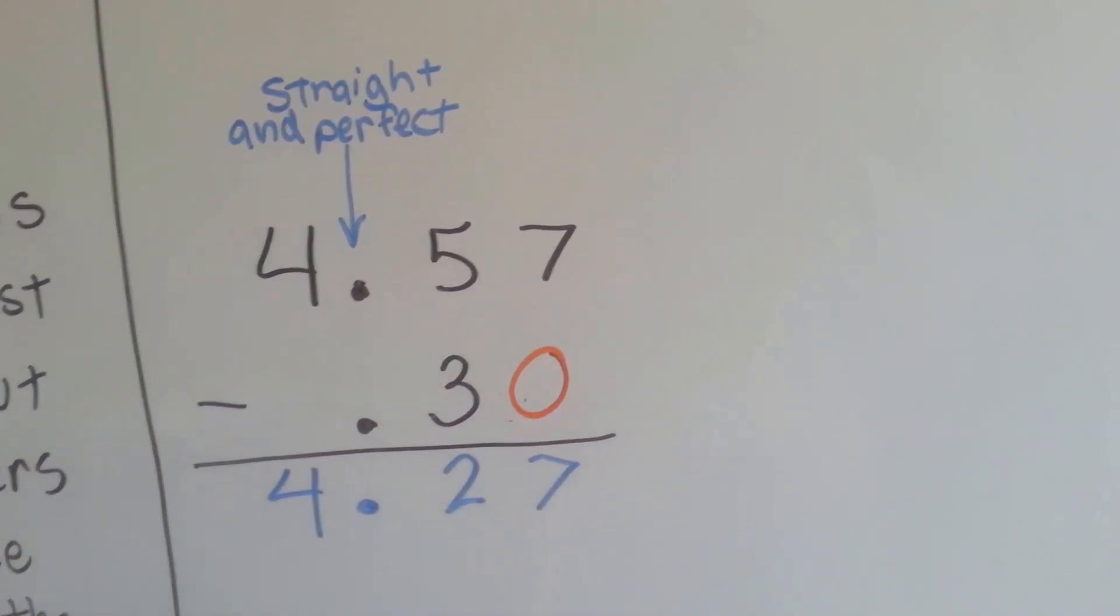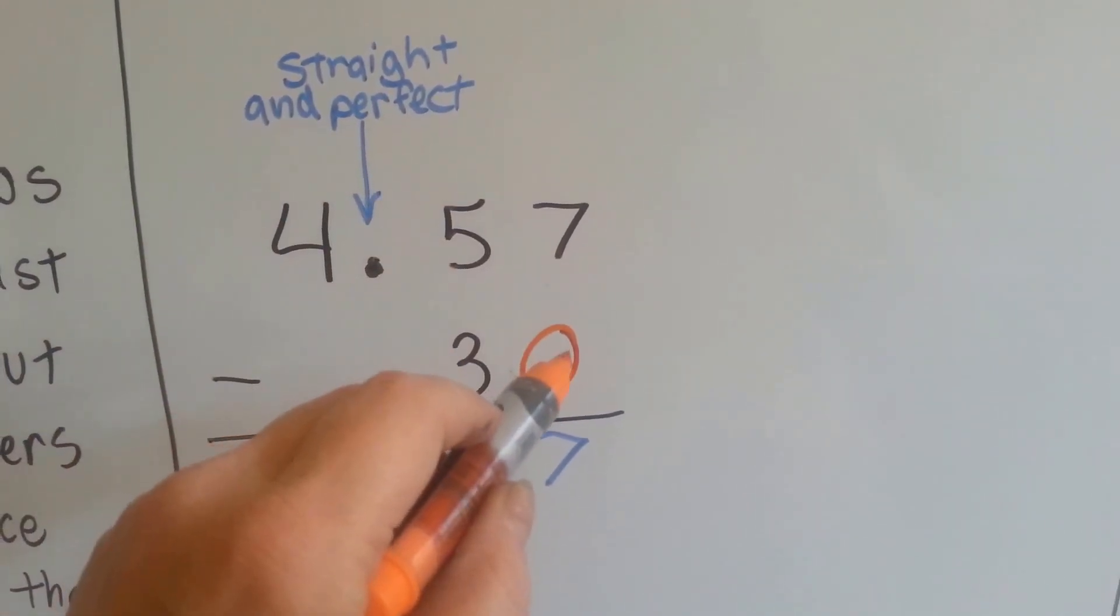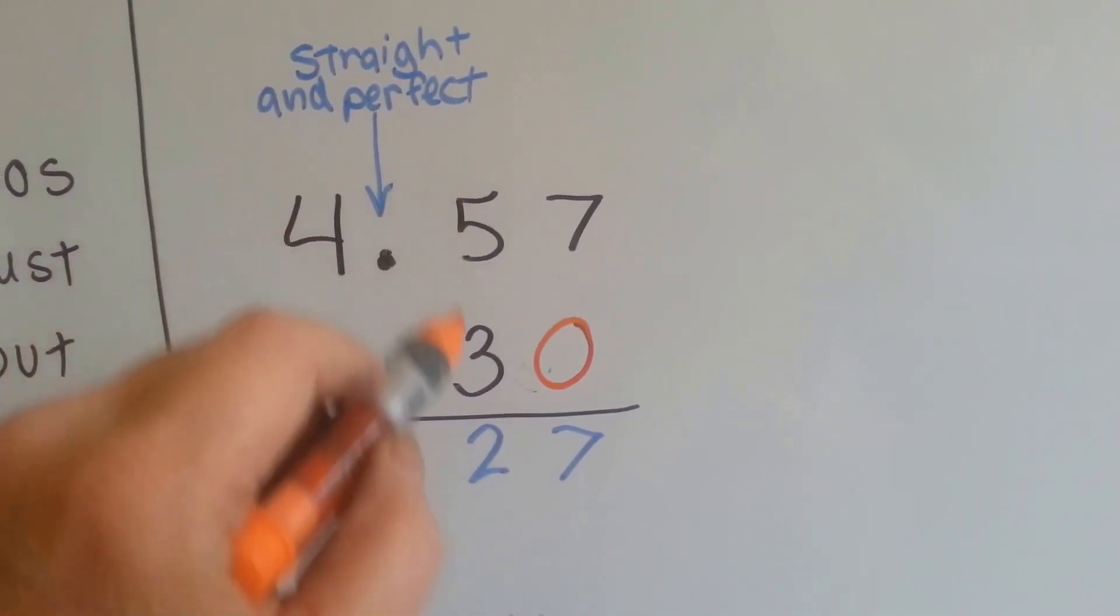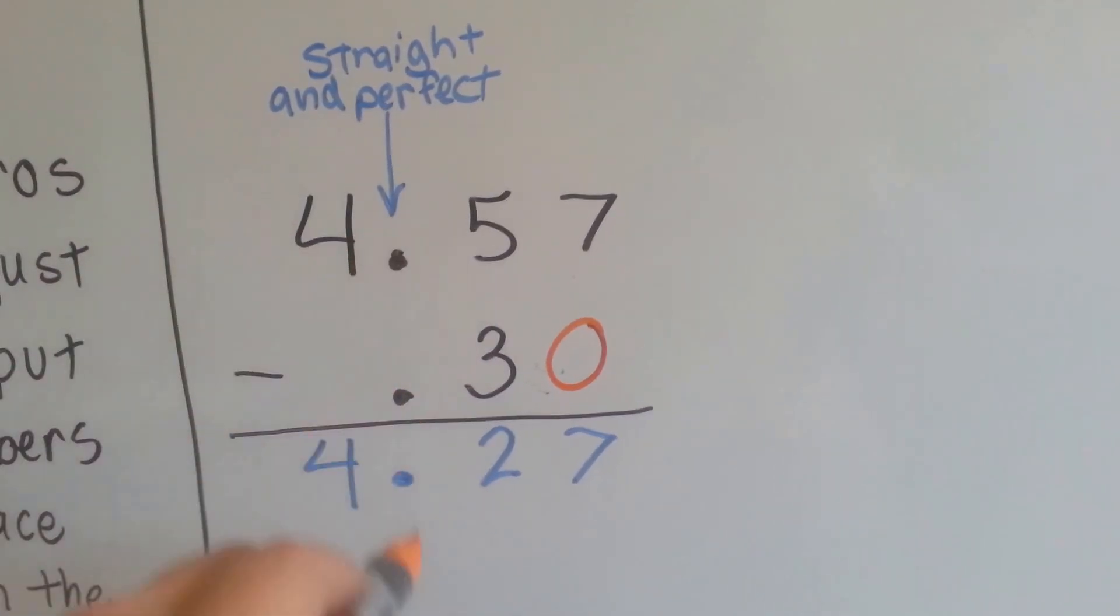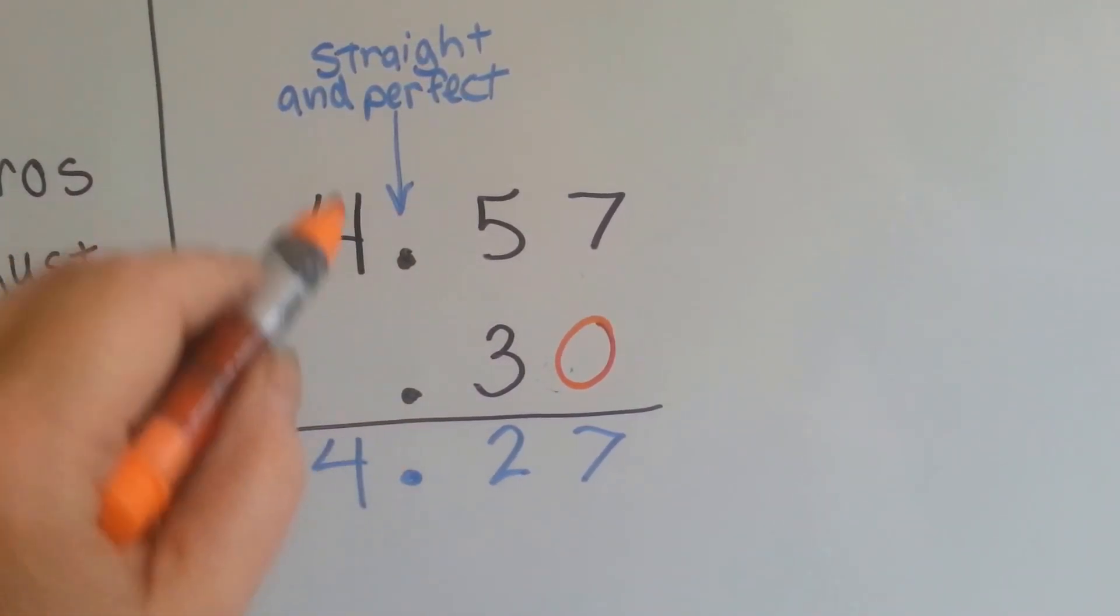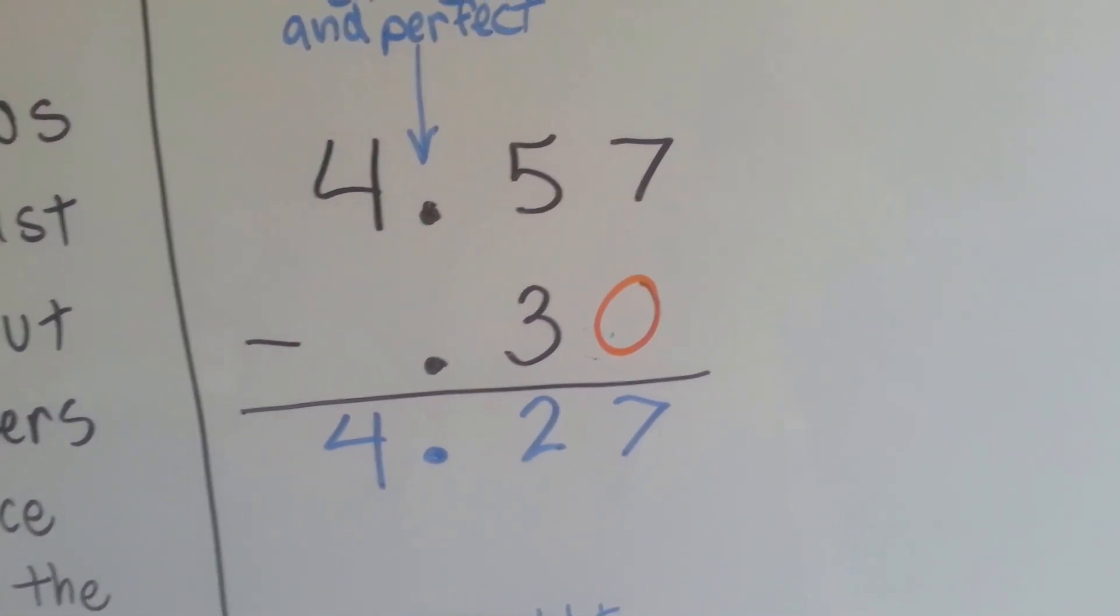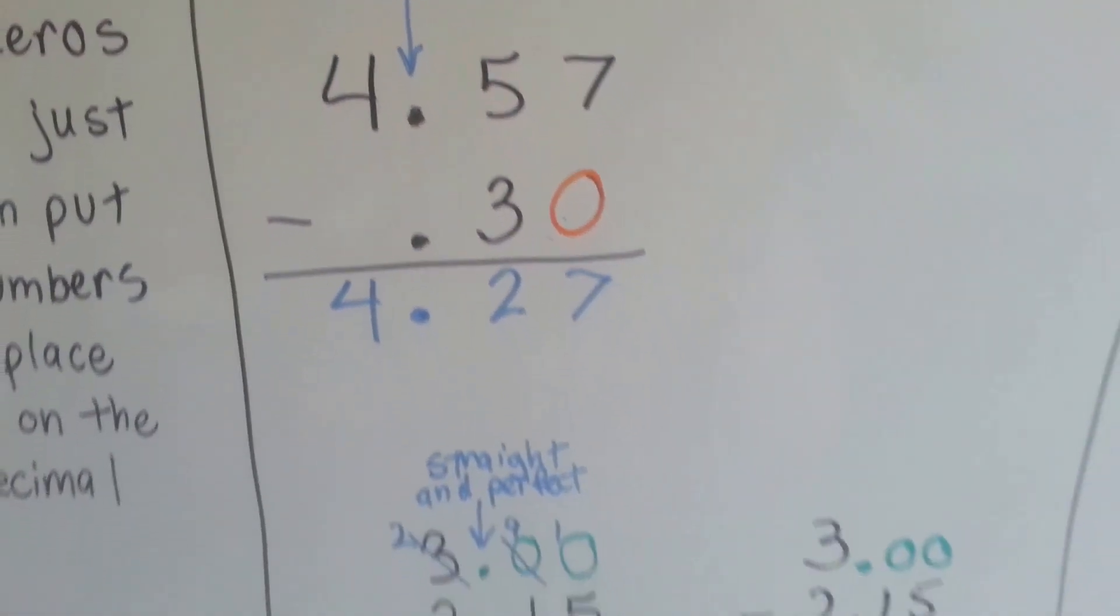So it doesn't matter if we put it in or not. You can put it in if you want it to help you. 7 take away none is 7. 5 take away 3 is 2. We've got our straight and perfect decimal points so we know we're doing the right place values. And we drop the 4 down and we have 4 and 27 hundredths. So we just added the zero there when we needed it.